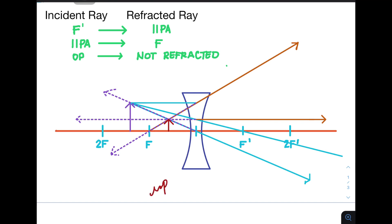So what would be our conclusion? First, the object is still upright, and it is now smaller than the actual object. And finally, it is a virtual image.